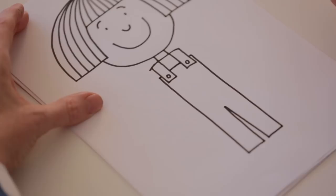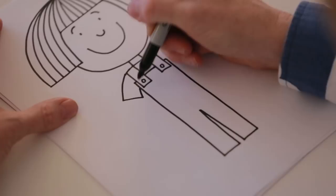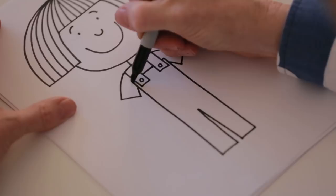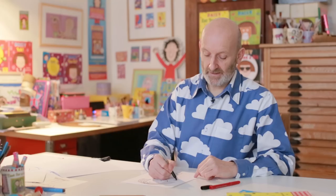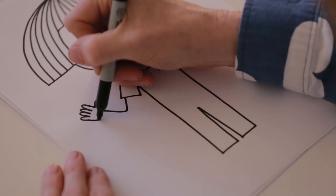Her dungarees are bright pink. And now two sleeves. Maybe make those lines a bit longer there. And let's have her waving.